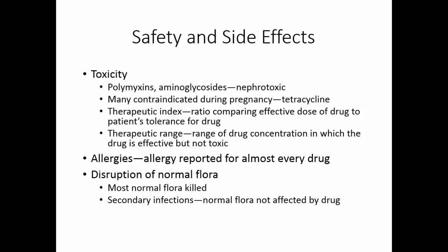If you kill most of the normal flora, that's going to allow secondary infections to potentially occur. That part of the normal flora not affected by the drug will be able to overgrow. Thrush and vaginitis are frequent secondary infections following broad-spectrum antibiotic treatment, caused by the yeast Candida albicans.